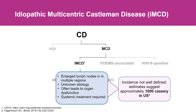Within idiopathic multicentric Castleman disease, we often subtype patients as having TAFRO syndrome, which is the most severe, with progressive thrombocytopenia and organ dysfunction, versus idiopathic multicentric Castleman disease not otherwise specified, where patients often have thrombocytosis and a much more chronic or less progressive disease course.